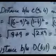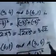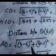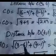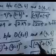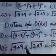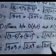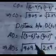Now the distance between D(6, 1) and A(3, 4): DA = square root of (3-6) whole square plus (4-1) whole square = square root of (-3) squared plus (3) squared = square root of 9 + 9 = 3 square root of 2.